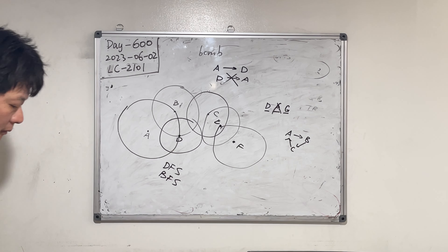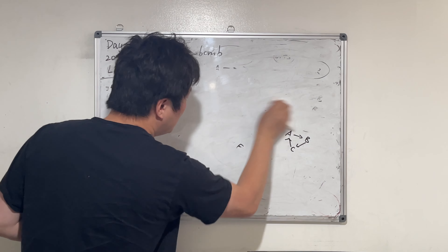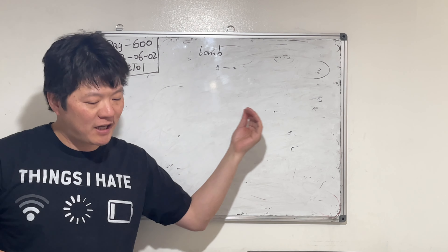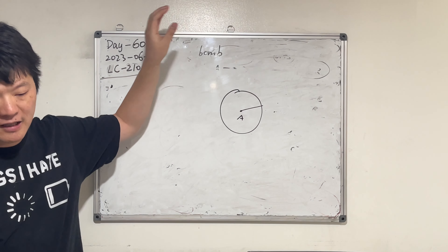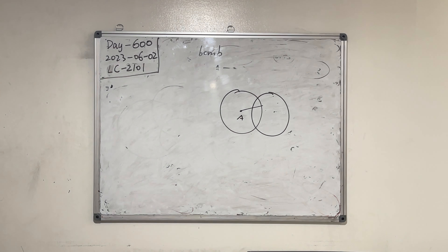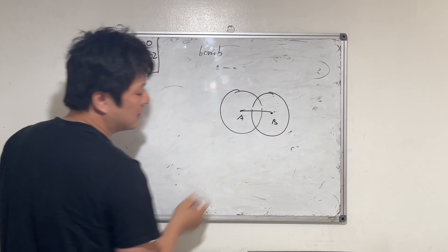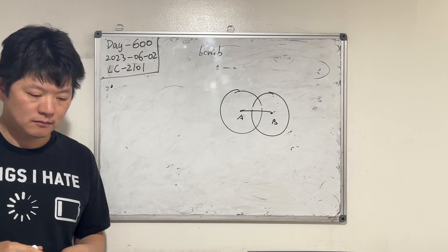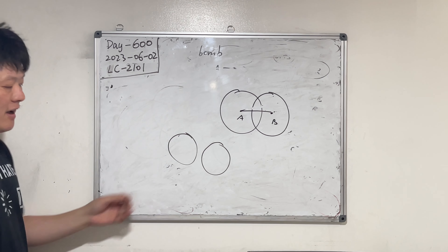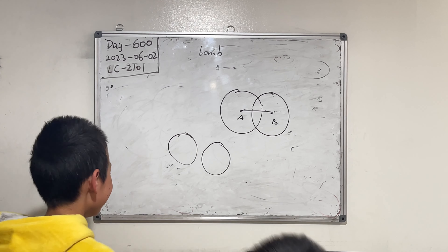Given two bombs, we want to find out if igniting A will also make B explode. We need a function: if we ignite A, does B also get affected? What if there are zero bombs? We just basically need to check the distance. And if the bombs are far apart, they don't ignite each other.